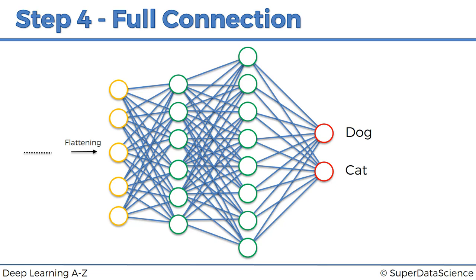We've already done all the groundwork — convolution, pooling, and flattening. Now the information is going to go through the artificial neural network. The information flows from the very start: the image is processed, then convolved, then pooled, flattened, and then through the artificial neural network — all four steps. Then a prediction is made.